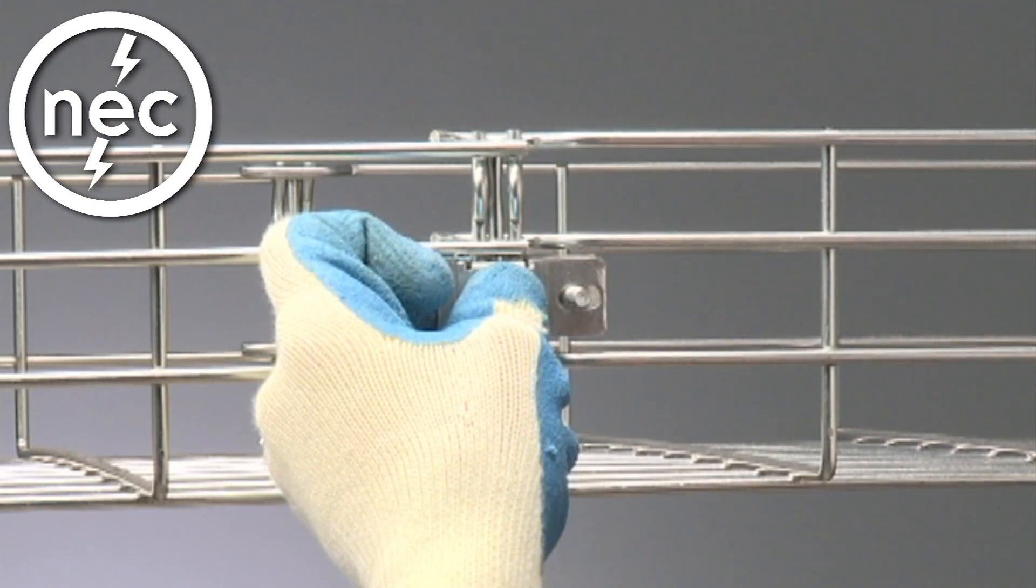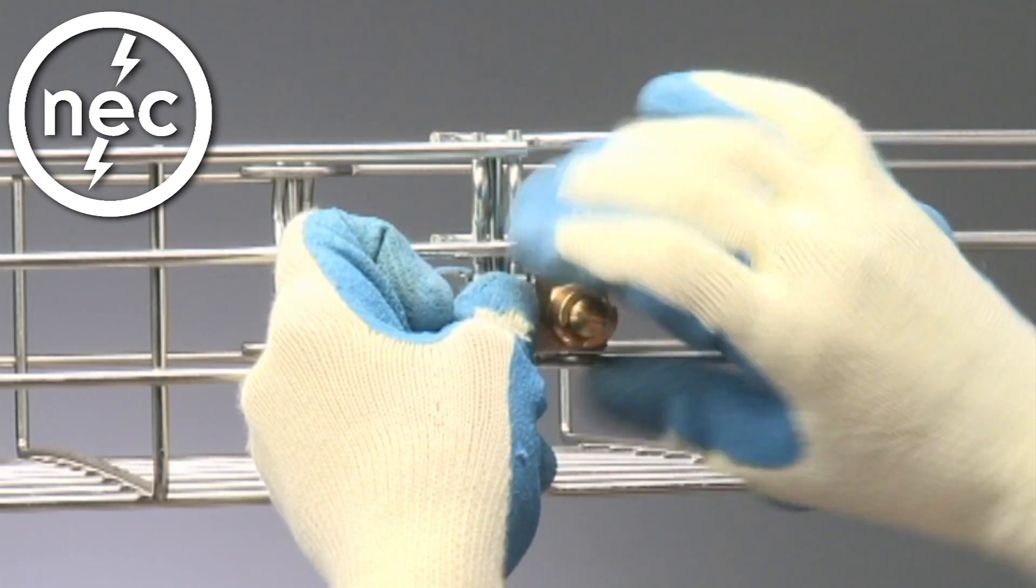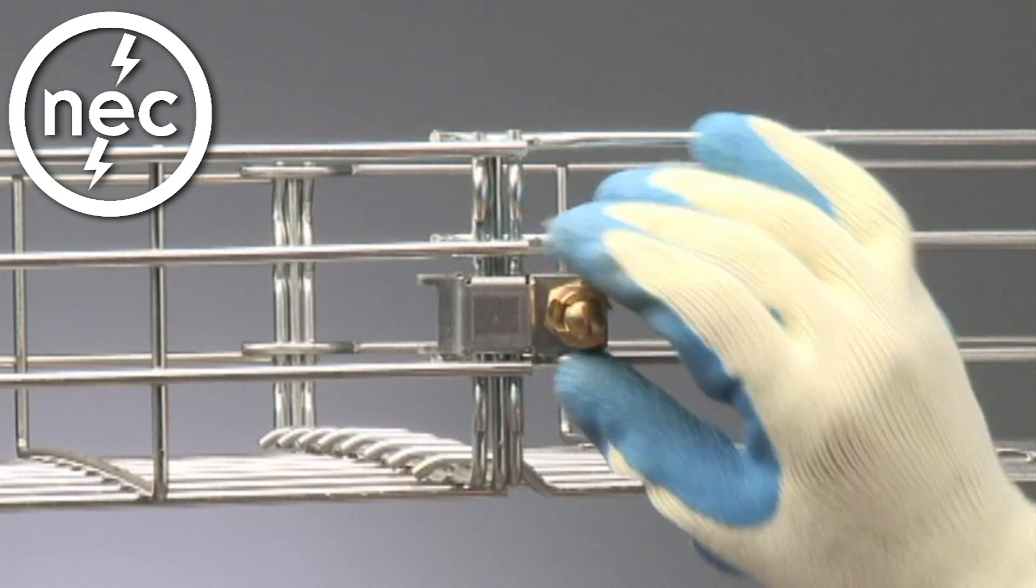When grounding is needed for NEC requirements, a bonding clip and lug are simply added at the joint to accept the ground wire.